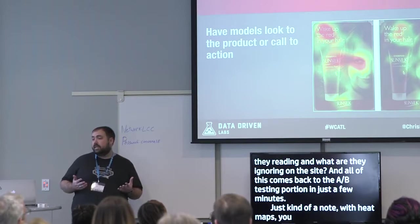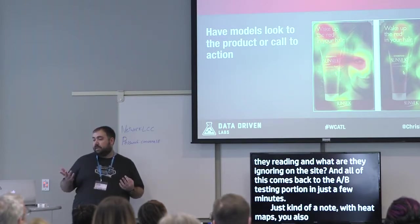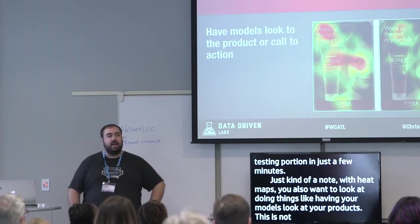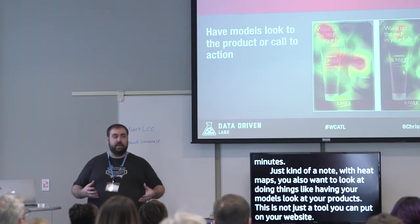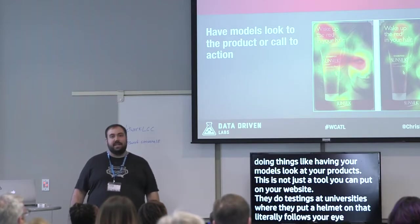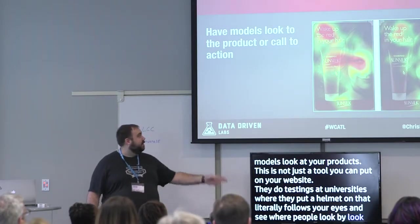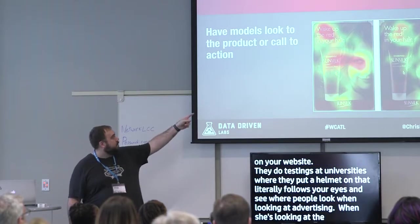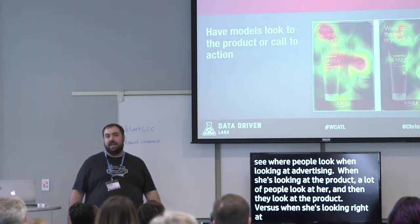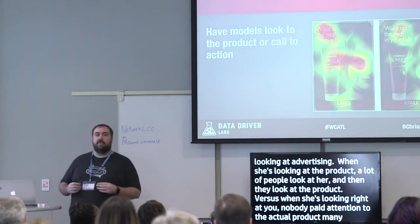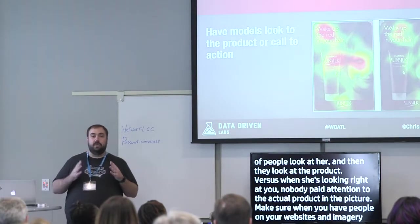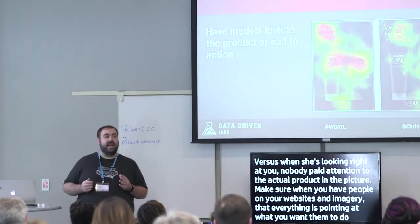With heat maps, you also want to consider how models look at your products. Universities have tested this with eye-tracking helmets: when a model is looking at the product, people look at her first and then the product. When she's looking directly at the camera, nobody paid attention to the actual product. Make sure everything in your imagery is pointing toward what you want people to do — and if not, that's an idea for an A/B test.